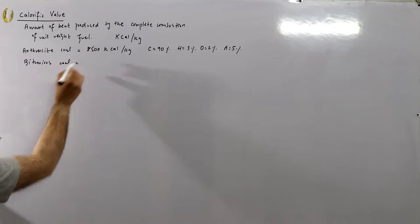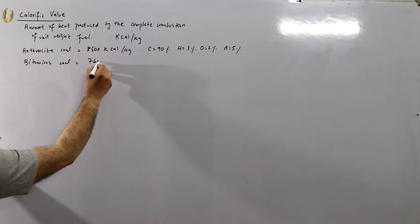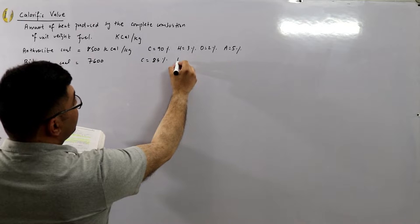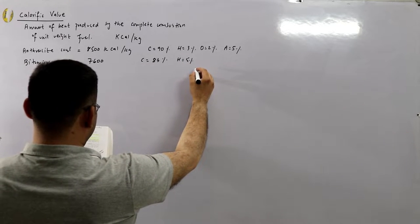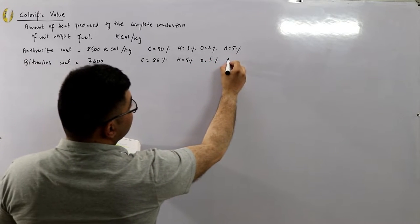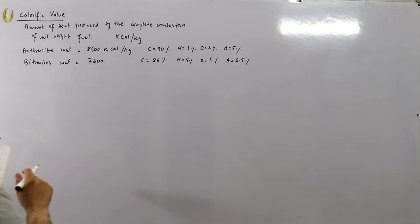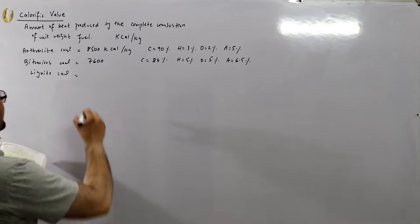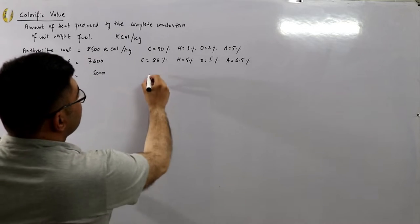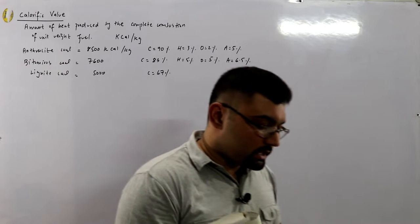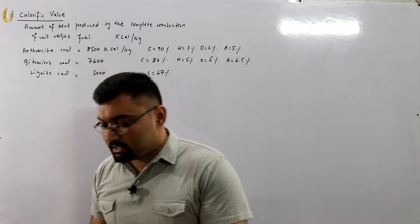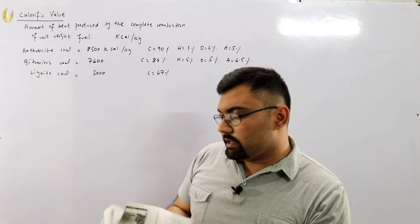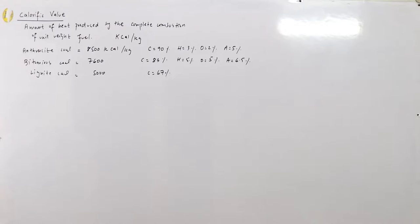Bituminous coal has a calorific value of 7600 kilocalories per kg, with 83% carbon, 5.5% hydrogen, 5% oxygen, and 6.5% ash. Lignite coal has a value of 5000 kilocalories per kg with only 67% carbon — below the 80% minimum required for use as fuel in a thermal power plant, so it cannot be used there.